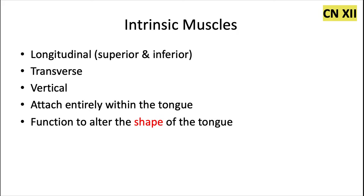Lastly, we have the intrinsic muscles — the longitudinal, the transverse, and the vertical muscles — all innervated by cranial nerve 12. Where the extrinsic muscles move the tongue, the intrinsic muscles alter the shape of the tongue, and all of them attach entirely within the tongue itself, hence why they're called intrinsic muscles.